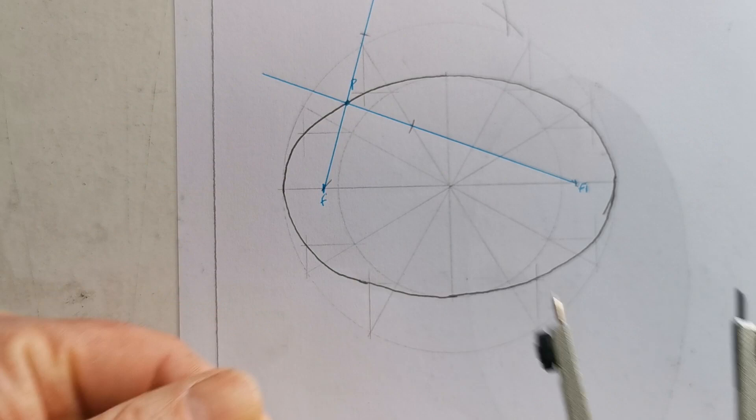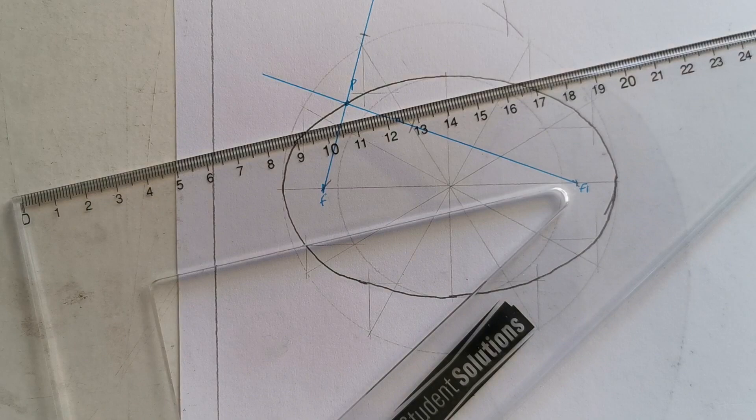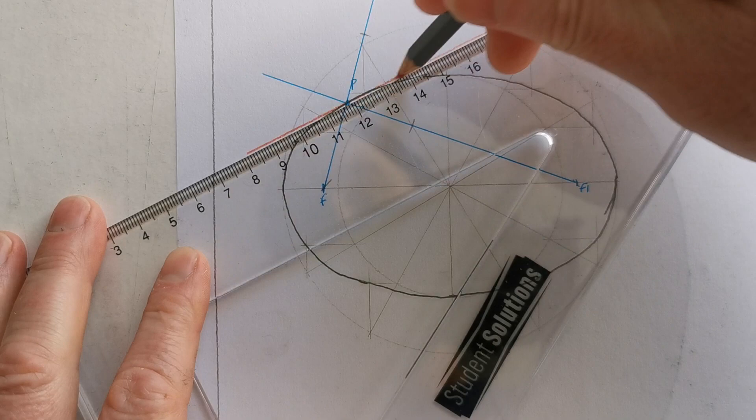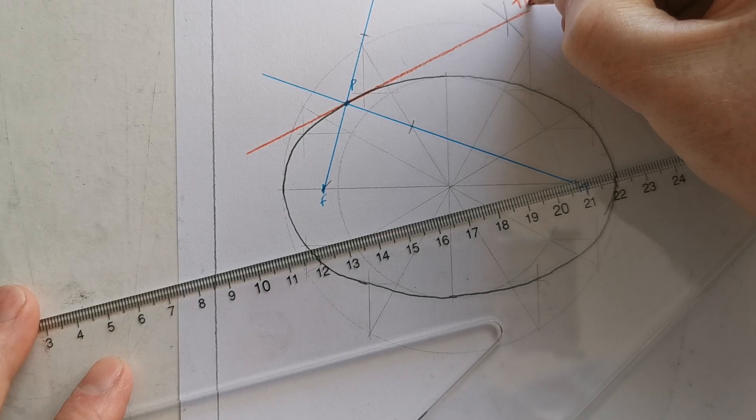And that there is going to be the tangent. So I'll just put the tangent in a different color. So that's the tangent.